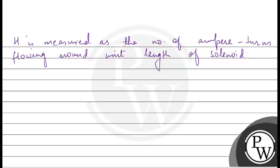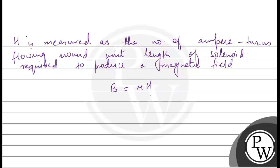H is the number of ampere turns per unit length of solenoid required to produce a magnetic field. So B is equal to μH. H is the number of ampere turns flowing around unit length of solenoid. Since n is the number of turns per unit length, H is equal to nI — meaning how much current flows per unit length to produce a magnetic field. The unit of H is ampere per meter. I hope you got it, thank you.